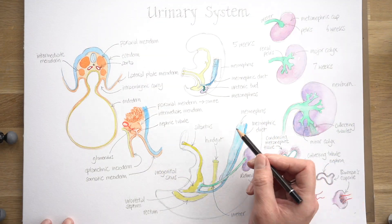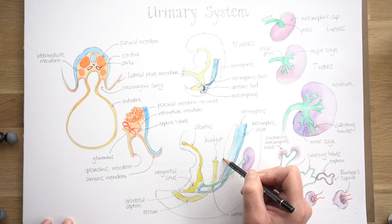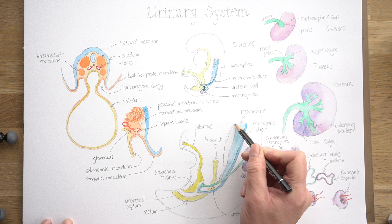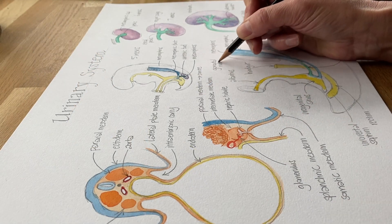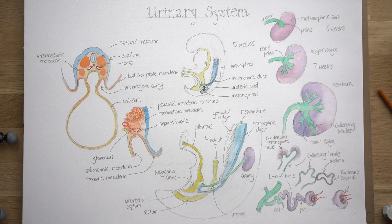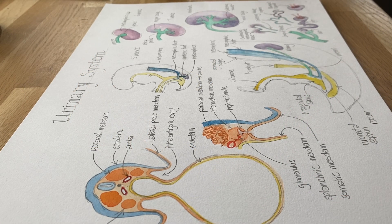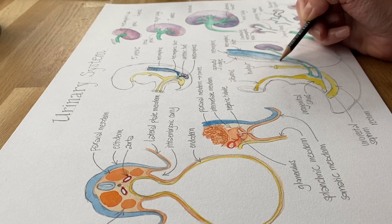In the next video I'm going to look at what becomes of the mesonephros — the mesonephric duct is still there, and if we look carefully we can see another block of tissue forming just medially to that mesonephros, which is the developing gonad. So we'll look more carefully at the mesonephros and that gonad in the next Lockdown Embryology video, where I'll focus on reproductive systems. I hope you've enjoyed this one — please like, share, and subscribe to my YouTube channel, and I'll see you again soon. Thank you for watching.